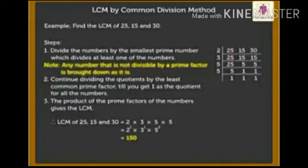Here, number 30 is divisible by 2, and 30 divisible by 2 is equal to 15. Here, numbers 25 and 15 are not divisible by 2, so we bring them down as is.